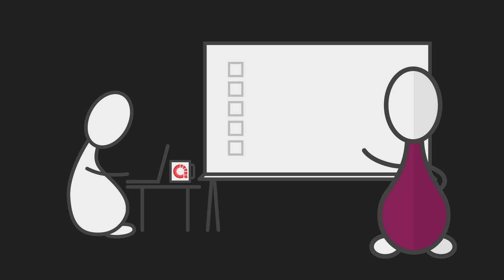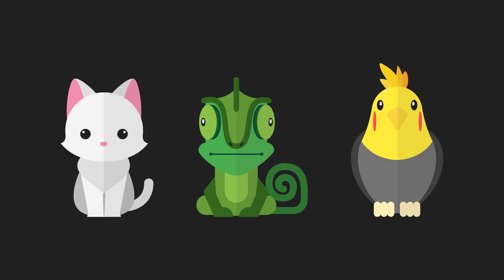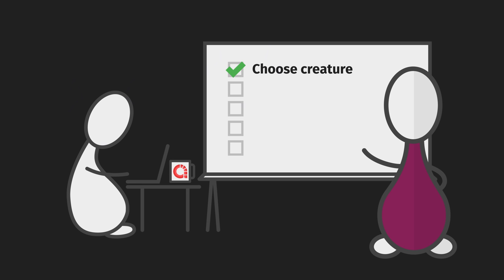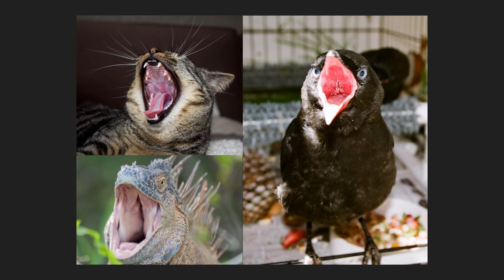The first step is to choose the animal species that you want to base your conlang on. There's a ton of options, so for the sake of brevity let's focus on cats, lizards, and birds in this video. After that, I'd recommend doing some research into the oral anatomy of the animal you're modeling your species after, the upper digestive and respiratory systems, and learn a bit about the vocalizations that they already make.